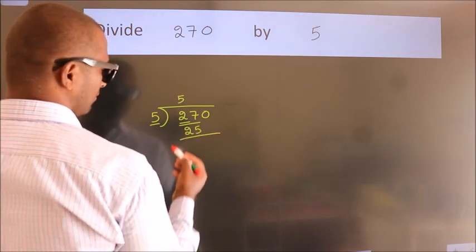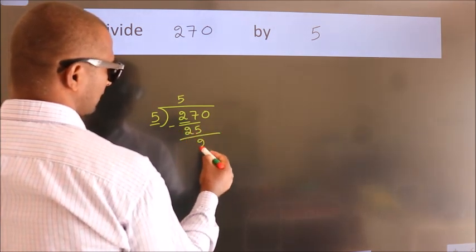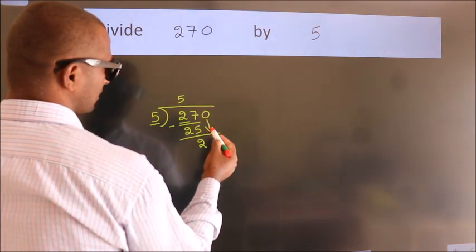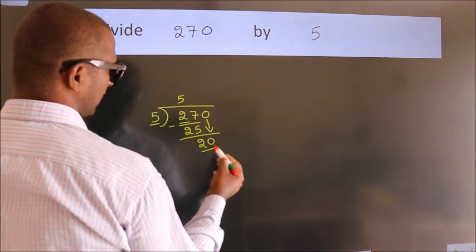Now we should subtract. We get 2. After this, bring down the beside number. So 0 down. So 20.